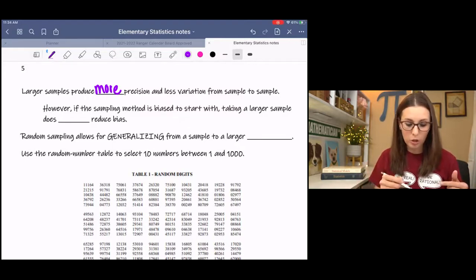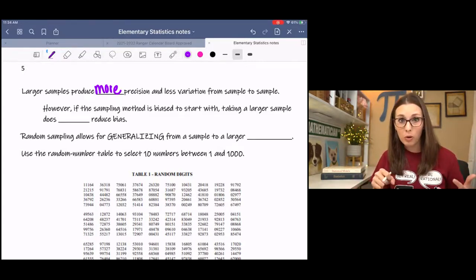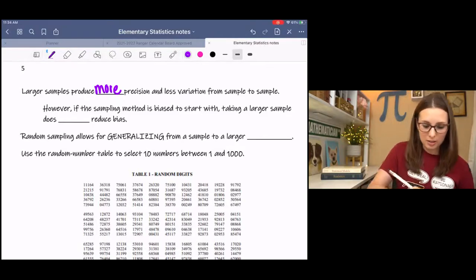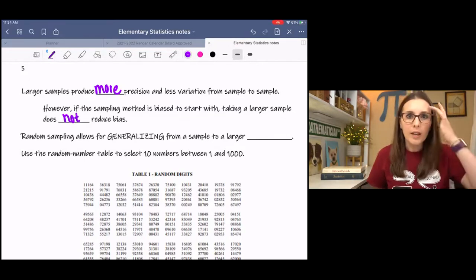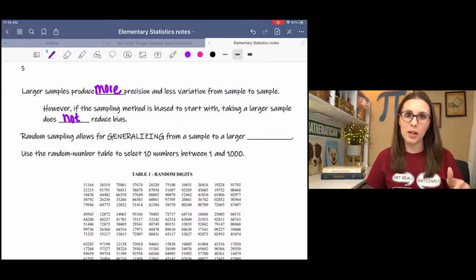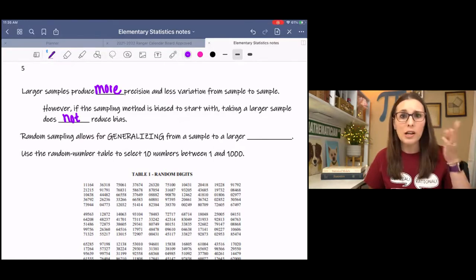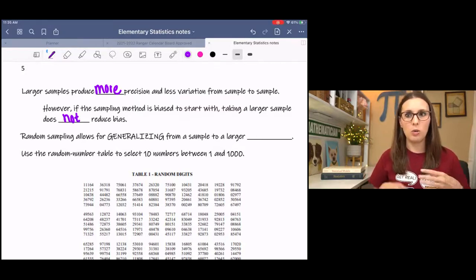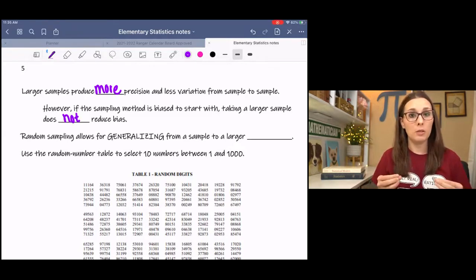If your sampling method is biased to begin with, then taking a larger sample of biased subjects does not reduce bias. So, if I have a class of 10 and I decide to survey those 10 because it's convenient and someone comes along and says, well, your sample is too small. And I'm like, oh, okay, then I'll use my class of 40. That's still biased. It's still convenience biased. Just because it's bigger doesn't make it more accurate. It has to be truly random for it to be accurate.